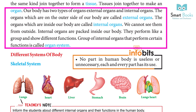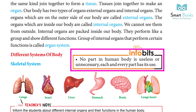Our body has two types of organs: external organs and internal organs. The organs on the outer side of our body are called external organs. The organs inside our body are called internal organs — we cannot see them from outside. A group of internal organs that perform certain functions is called an organ system.